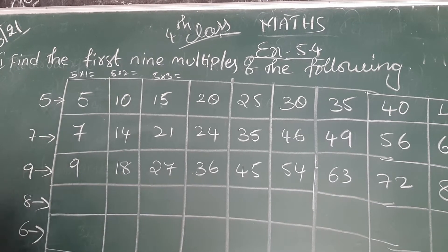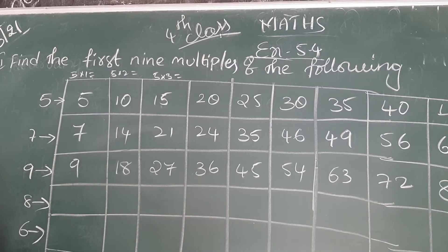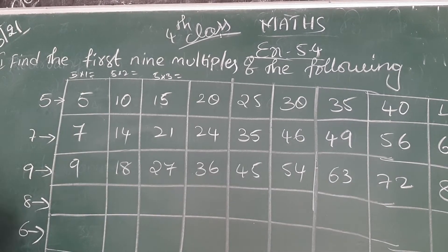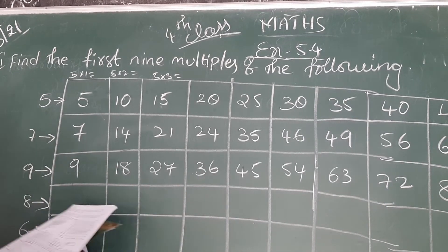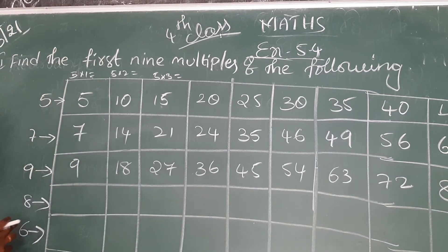Next, which table next? 6 table. Let's go for 6 table. 8 table.